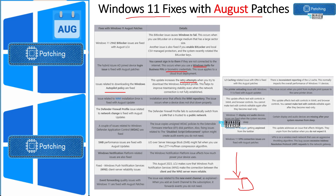If there is a network connectivity issue when a device connects to Wi-Fi, the increased retry attempts help to successfully download the Windows Autopilot policy. WMI-related issues got fixed, Defender Firewall profile-related issues got fixed when there is a network connection change, and Defender Application Control-related issues were also fixed with August patches.